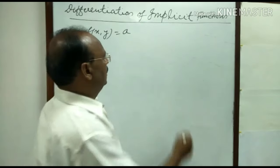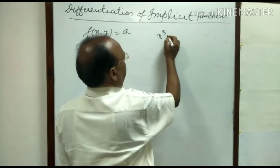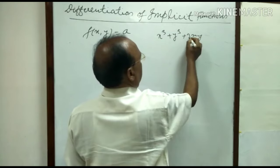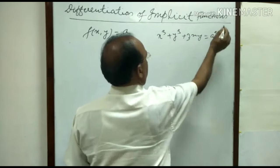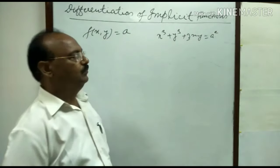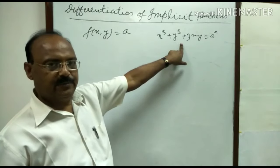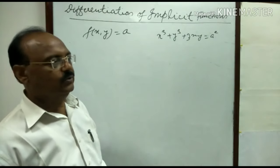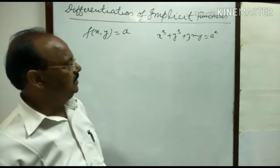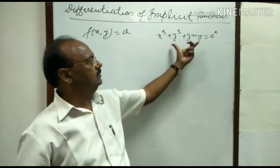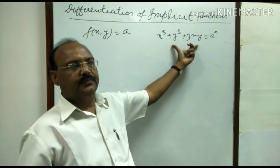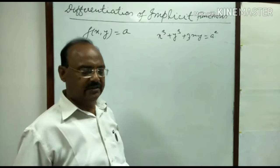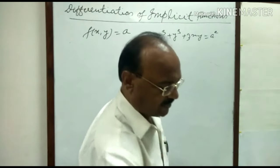For example, suppose you write x cube plus y cube plus 3xy is equal to a square. In this case y cannot be expressed directly in terms of x. So in this section we will see differentiation of this type of functions. We will make it clear with the help of some exercises.